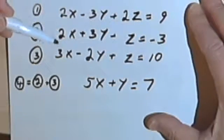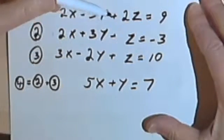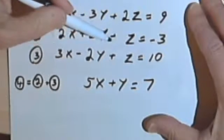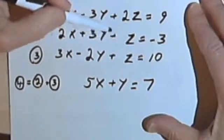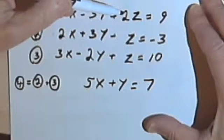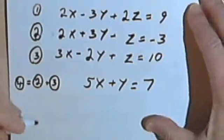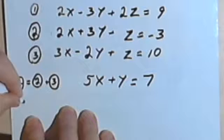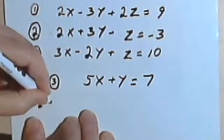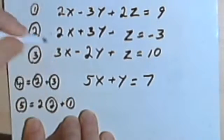Now I've got to make another equation with just x and y. Looking at my first three equations, I realize if I take the second equation, which has a negative z in it, and multiply it by 2, that will give me a negative 2z. And then I could add it to the first equation, which has a positive 2z, and I would cancel my z's out. So I want to create equation number 5, and equation number 5 is going to be 2 times equation number 2 plus equation number 1.